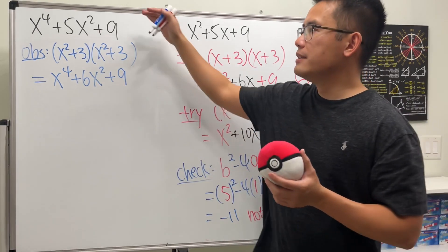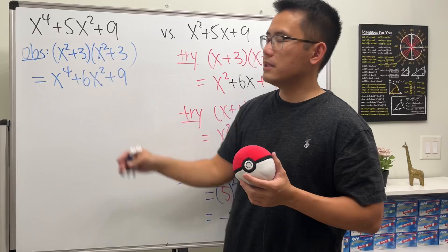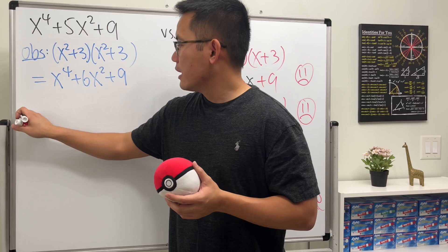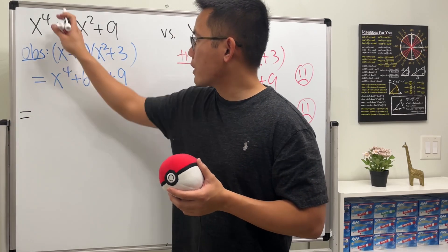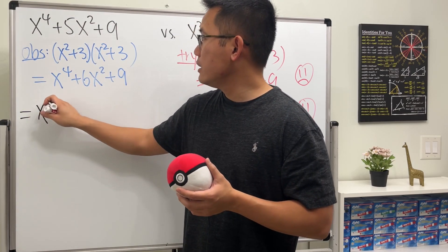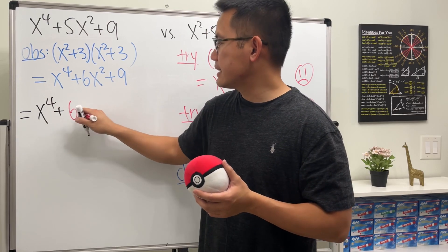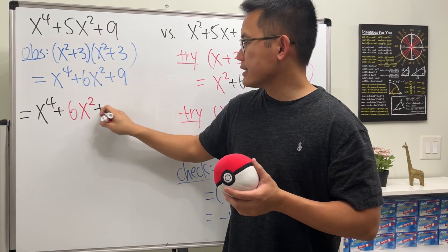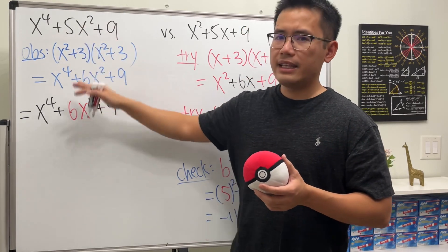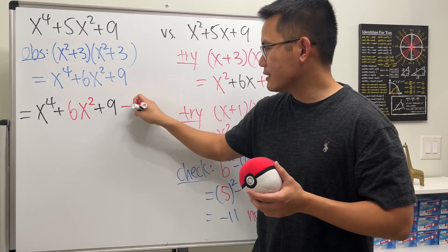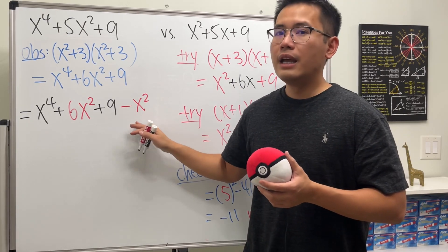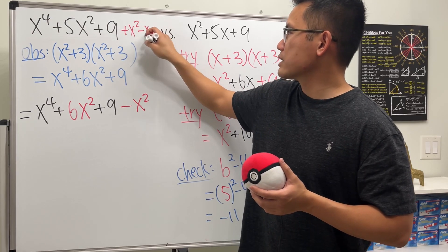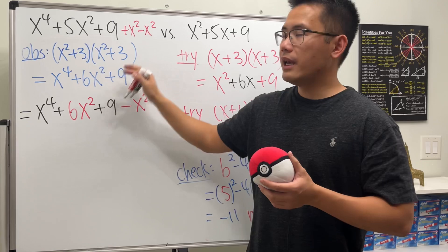And the key right here is that this is quartic and the middle term is x squared term. So in fact we can actually just do the following. Check this out. This right here, we can purposely rewrite this: x to the fourth power plus 6x squared and then plus 9, but of course they are not equal. Don't worry, I'm just going to minus x squared at the end.